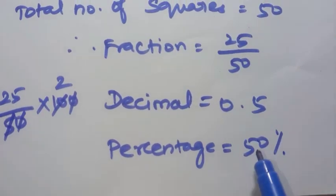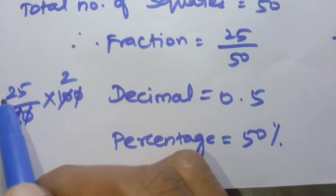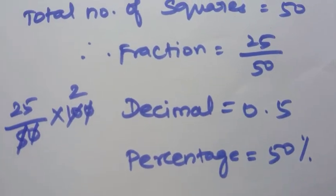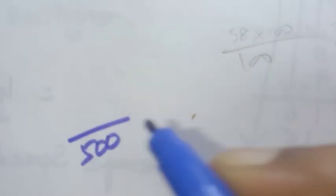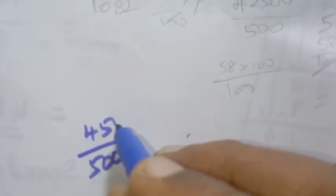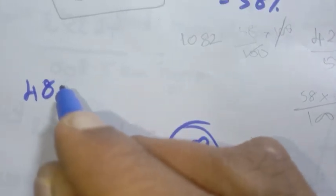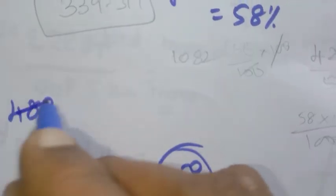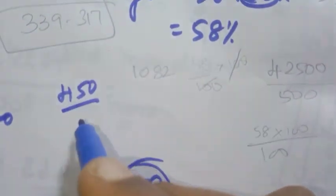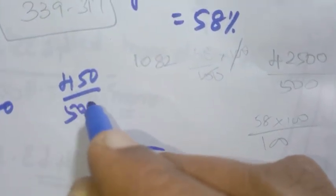To understand percentage: if you have exam marks, your total is 500 (all subjects combined). Suppose you score 450 out of 500. To find the percentage: 450 divided by 500, multiplied by 100.